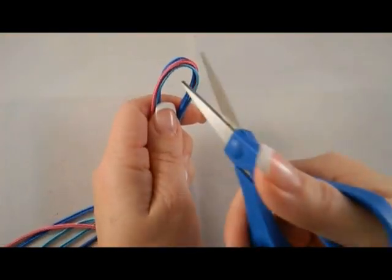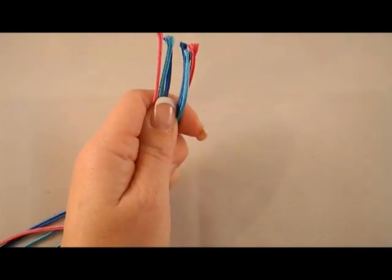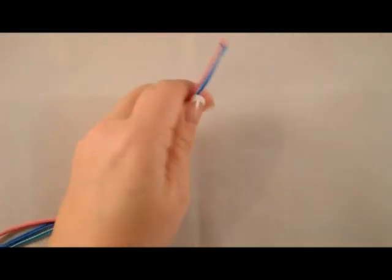You'll begin by cutting all three lengths of soutash in half. Keep half on your work surface and put the other half aside to be used for the second earring.